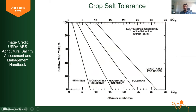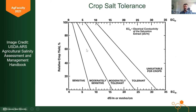If you're sensitive, you're going to start declining yield somewhere between 1 and 2 decisiemens per meter. If you're moderately sensitive, yield starts declining around 3 decisiemens, and so on. Barley is all the way at the other end — it doesn't start losing yield until 10 decisiemens. These are a really helpful way to model what your yield impacts are going to be. If you know your soil EC, you can say: I have cotton at EC 8, I'm still good to grow cotton here.